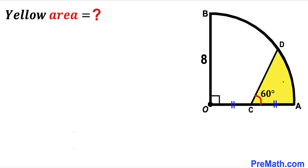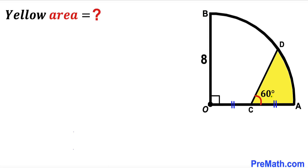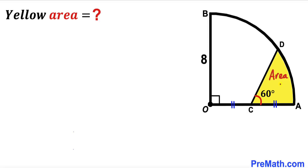Welcome to pre-math. In this video we have a yellow shaded region fully confined in a quarter circle with center O, such that the radius of this quarter circle is 8 units, the angle ACD is 60 degrees, and segment OC is equal to segment AC. Our task is to calculate the area of this yellow shaded region.